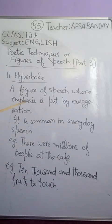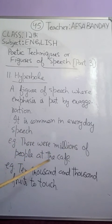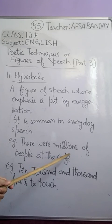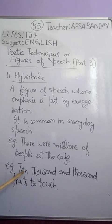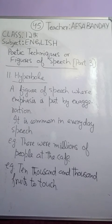Next is hyperbole — a figure of speech where emphasis is put on exaggeration. Something is presented in a very exaggerated form. For example, 'there were millions of people at the cafe' — it doesn't really mean there were millions of people; it means there were a lot of people, presented in an exaggerated way to create a vivid image. Or '10,000 fruits to touch on the tree' — it doesn't mean there were really 10,000 fruits; it just means the tree was full of fruits. That is called hyperbole.